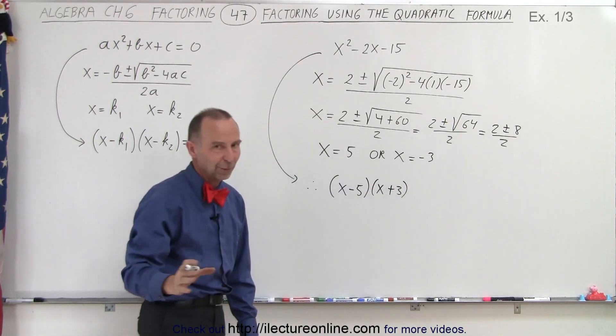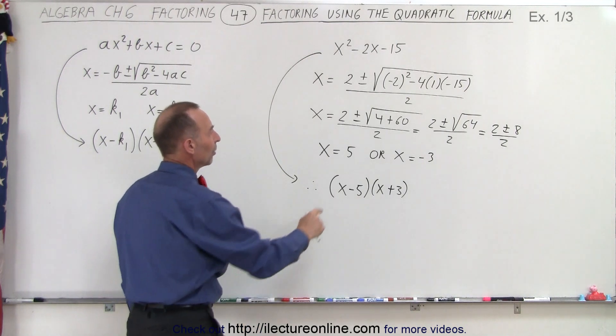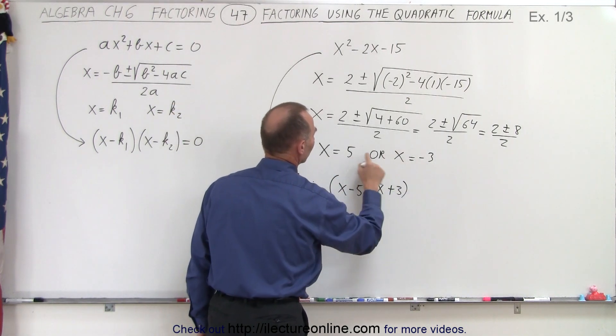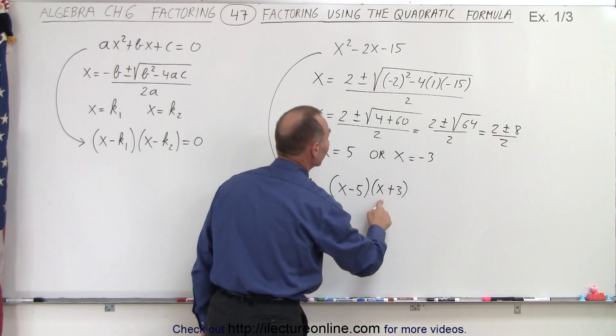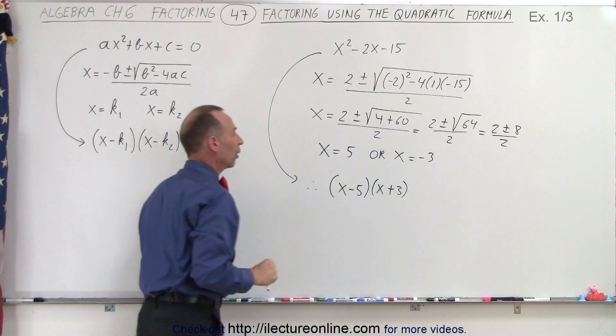We don't have to write equal to 0 because it wasn't an equation. Simply put in the opposite values, the negative value of 5 and a positive value of negative 3, and that will then give you the factored form of our original problem.